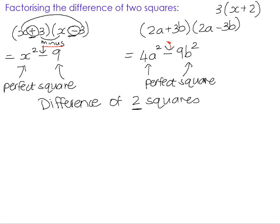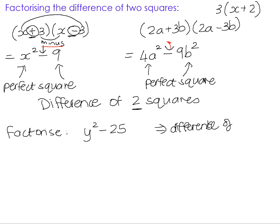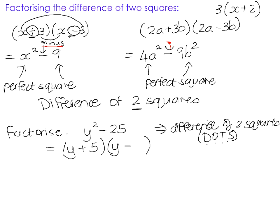Now, if we want to factorize the difference of two squares, we can use exactly that concept but in reverse. For example, if we want to factorize y squared minus 25: y squared is a perfect square, 25 is a perfect square, and we are subtracting them — so this expression is the difference of two squares. We know it will come from a product of two binomials that look exactly the same, except one is a sum and one is a difference. y times y gives y squared, and 25 is 5 times 5 — so we factorize it as the product of sum and difference binomials.